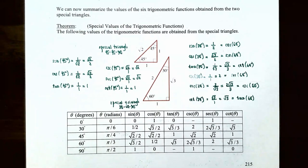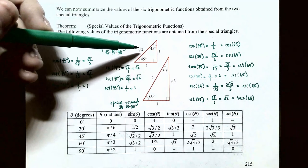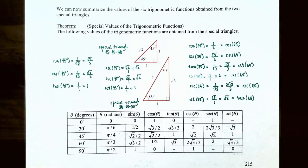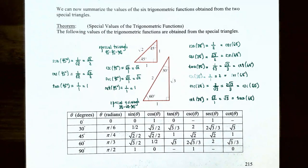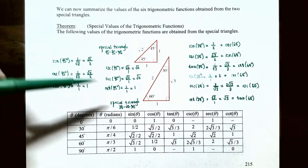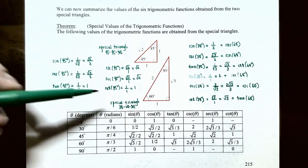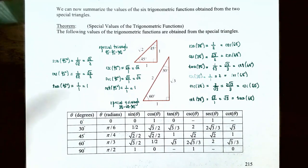Cosecant of 45° is the reciprocal of sine = √2/1 = √2. Secant of 45° is the reciprocal of cosine = √2/1 = √2. Cotangent of 45° is the reciprocal of tangent = 1/1 = 1.